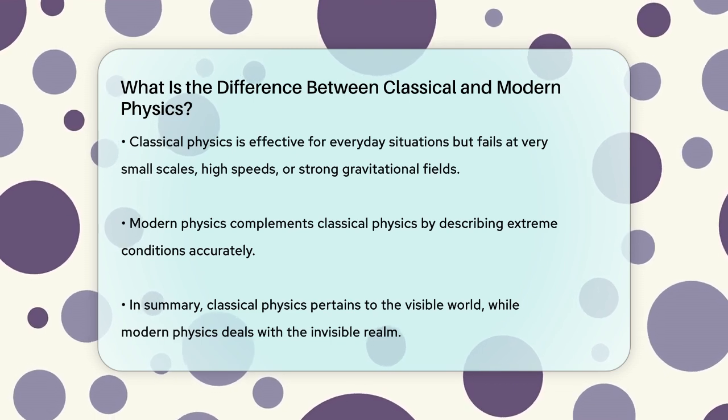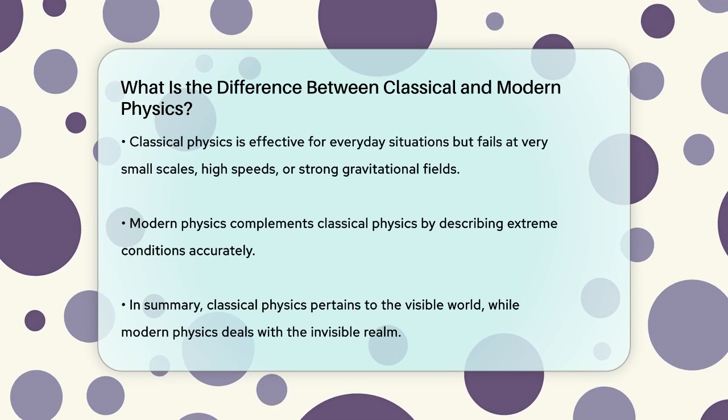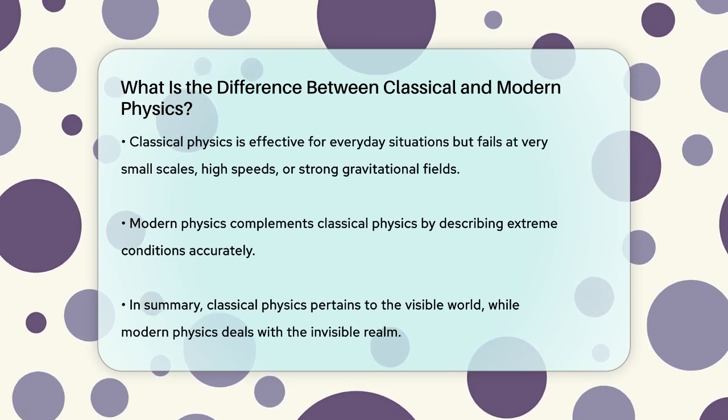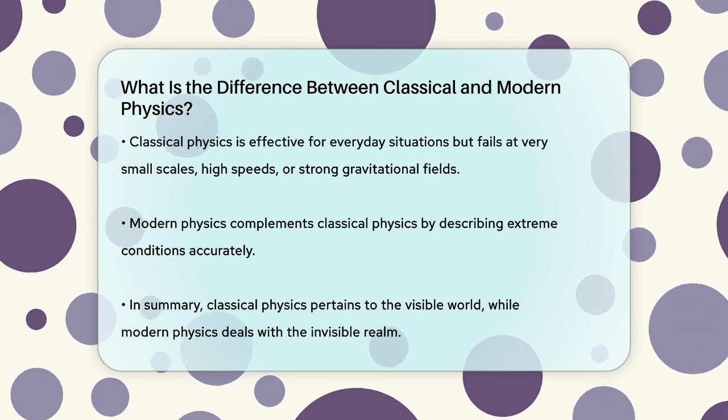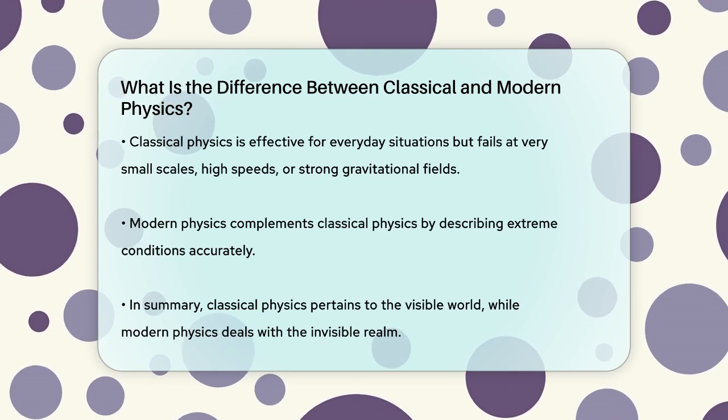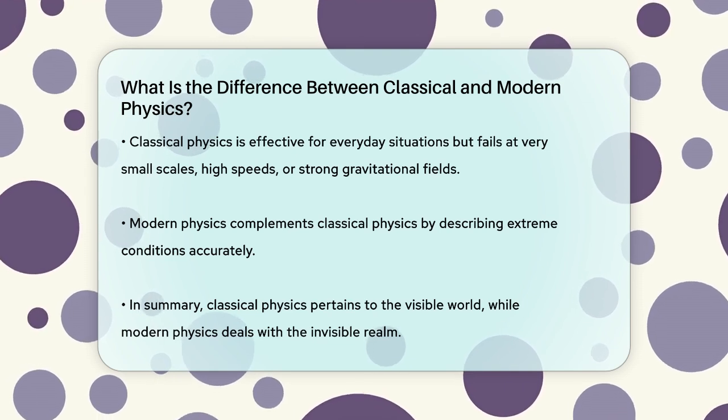So to put it simply, classical physics is about the big visible world, while modern physics is about the tiny invisible world, and each has its own set of rules and ways of understanding how things work.